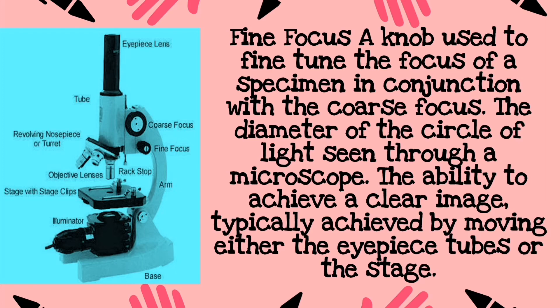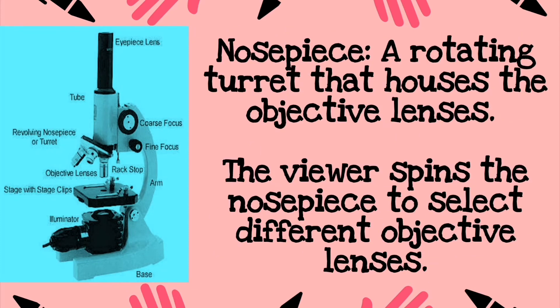Next is the fine focus knob, used to fine-tune the focus of a specimen in conjunction with the coarse focus knob. The field of view is the diameter of the circle of light seen through a microscope — the ability to achieve a clear image, typically achieved by moving either the eyepiece tubes or the stage.